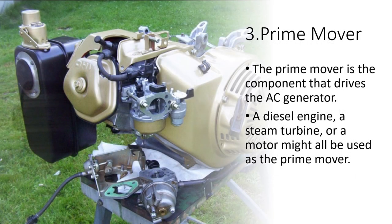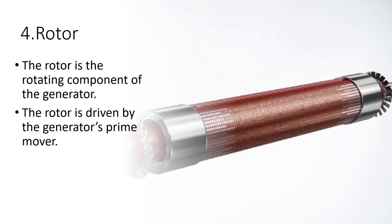Number 3: Prime Mover. The Prime Mover is the component that drives the AC Generator. A diesel engine, a steam turbine, or a motor might all be used as the Prime Mover.